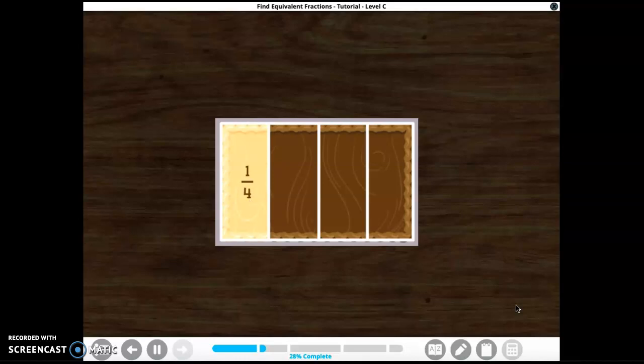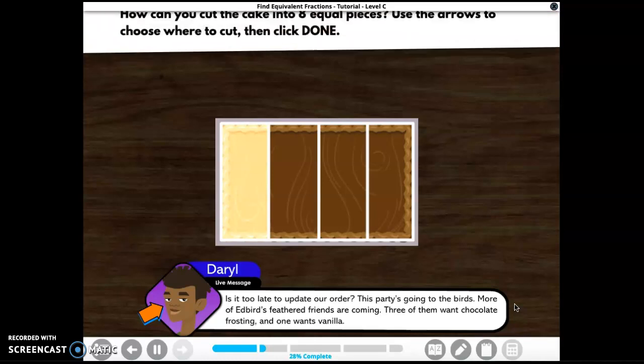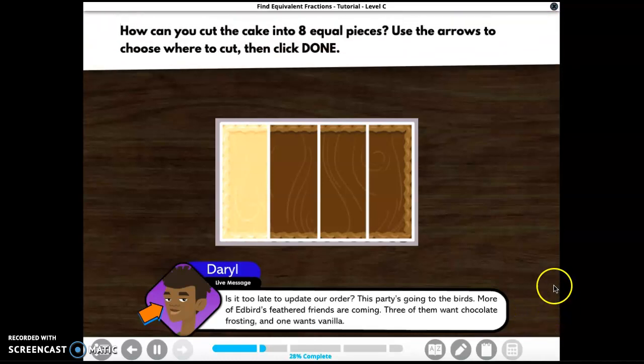Hey look, Daryl's changing the request. His message says, is it too late to update our order? This party's going to the birds. More of Edward's feathered friends are coming. Three of them want chocolate frosting and one wants vanilla. No worries, we can still use the same amount of cake, but now we need eight equal pieces.